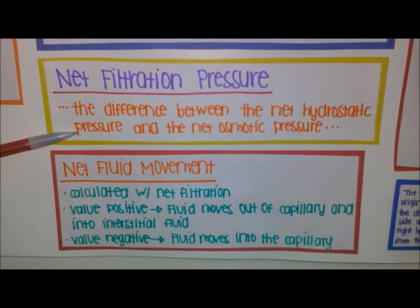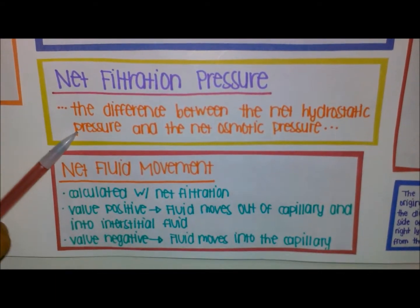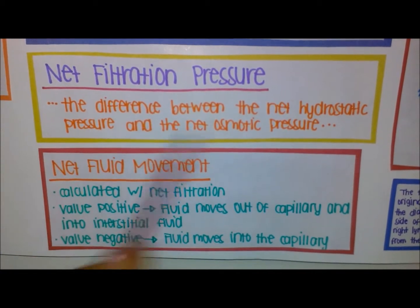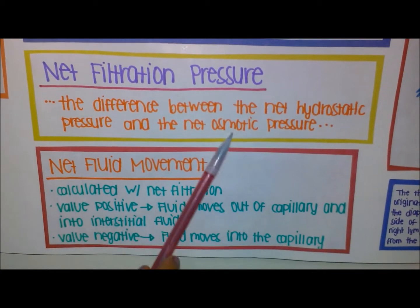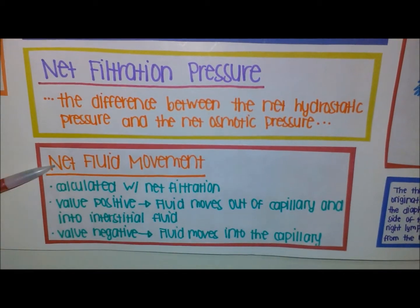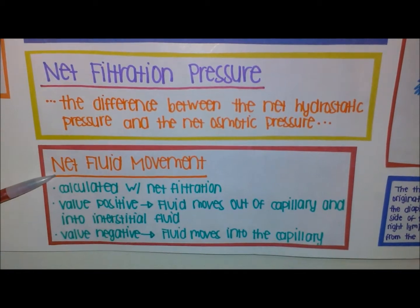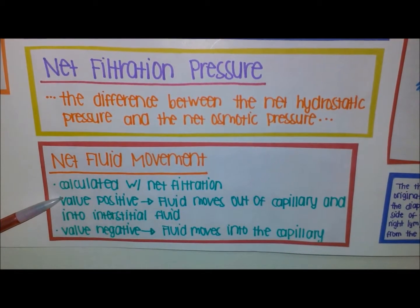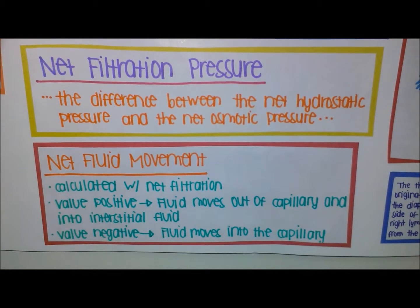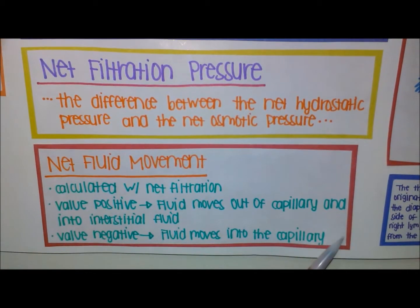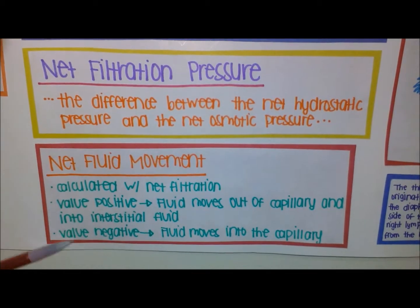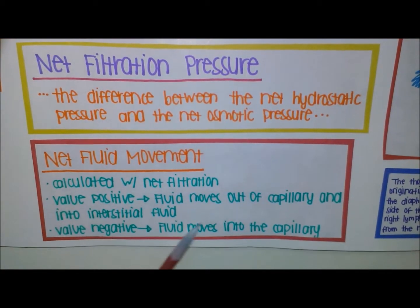Net filtration pressure is the difference between net hydrostatic pressure and net osmotic pressure. To find net filtration pressure, subtract the net osmotic pressure from the net hydrostatic pressure. If the value is positive, fluid moves out of the capillary into the interstitial fluid; if negative, fluid moves into the capillary.